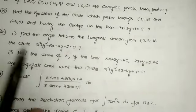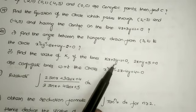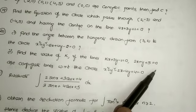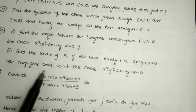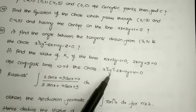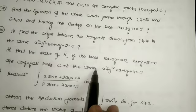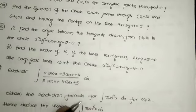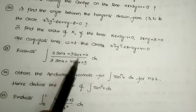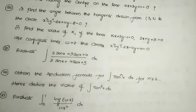Question 20 continued: find the value of k if the lines kx + 3y − 1 = 0 and 2x + y + 5 = 0 are conjugate lines with respect to the circle x² + y² − 2x − 4y + 4 = 0. Question 21: evaluate ∫ (2sinx + 3cosx + 4) / (3sinx + 4cosx + 5) dx.